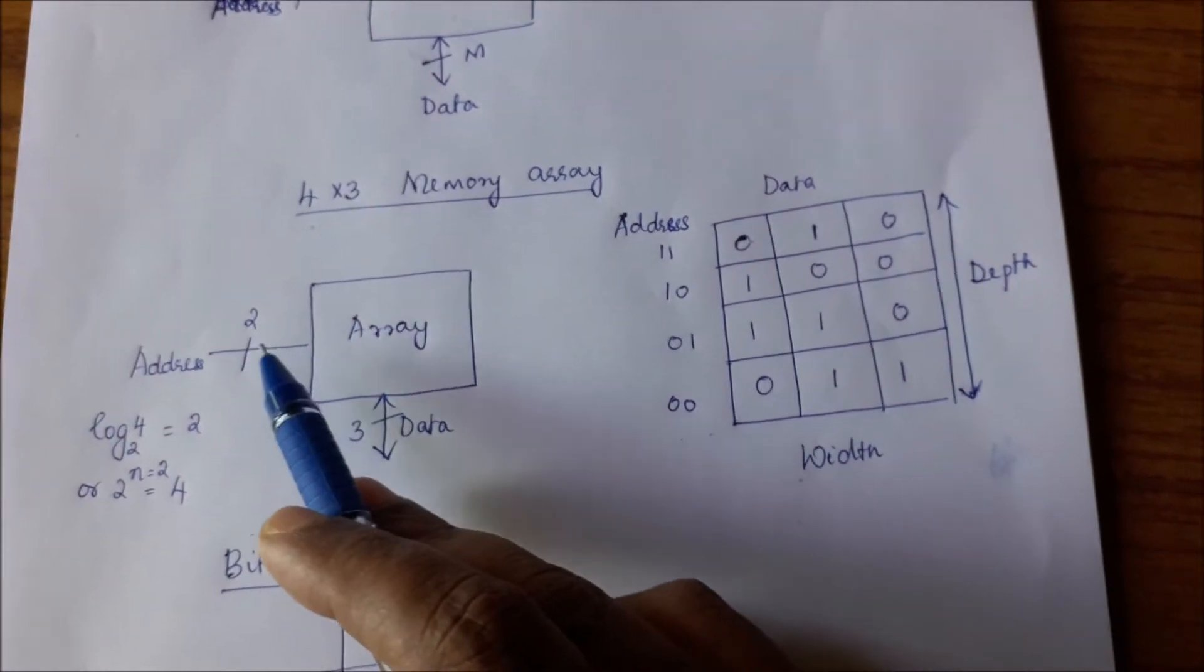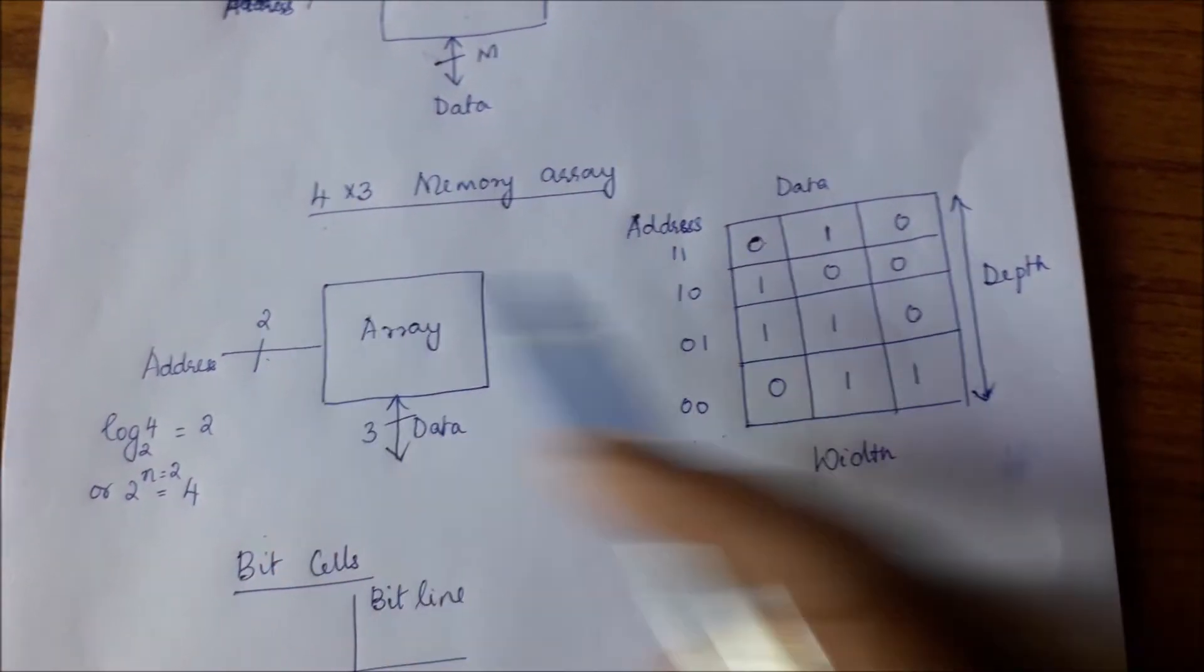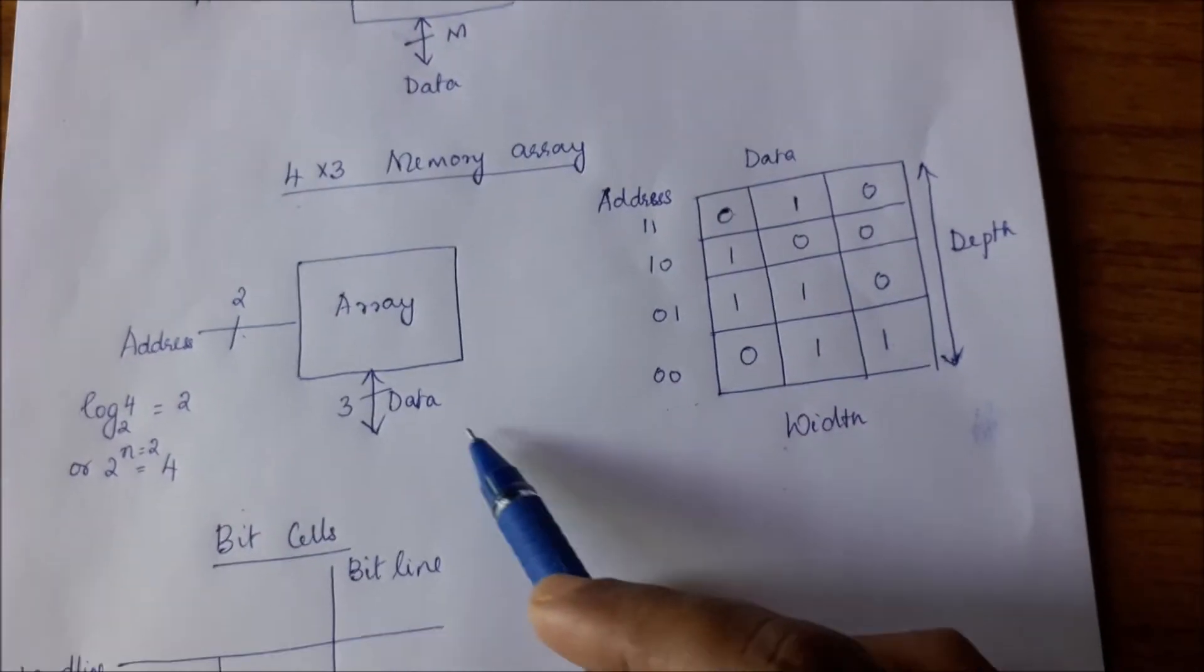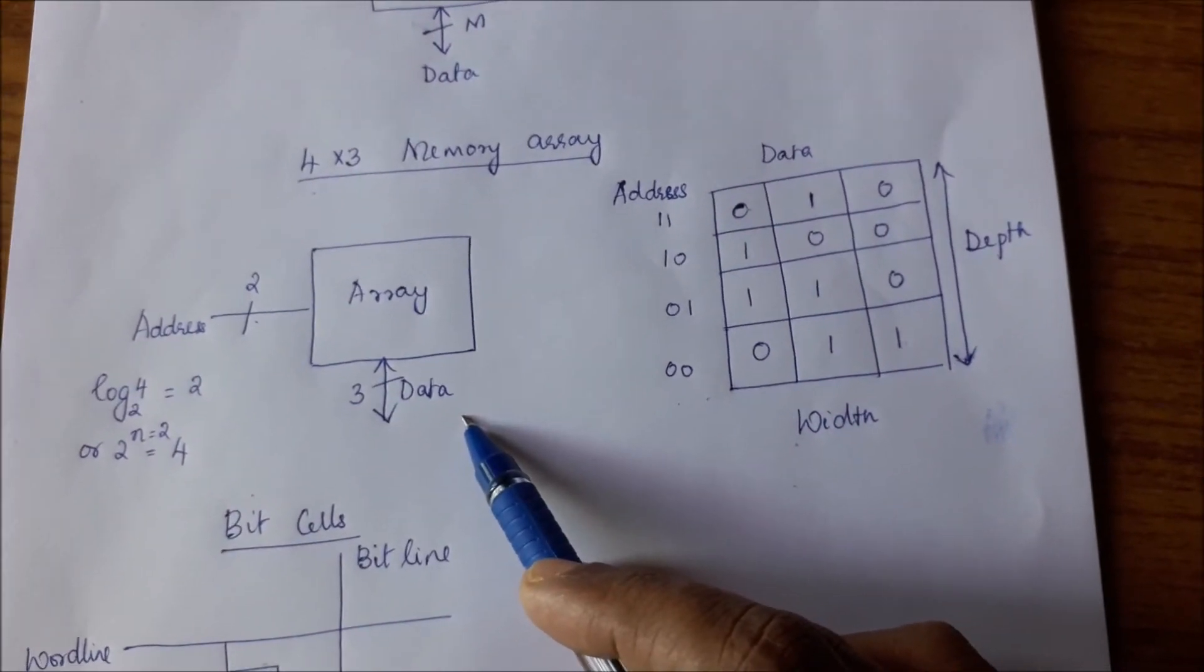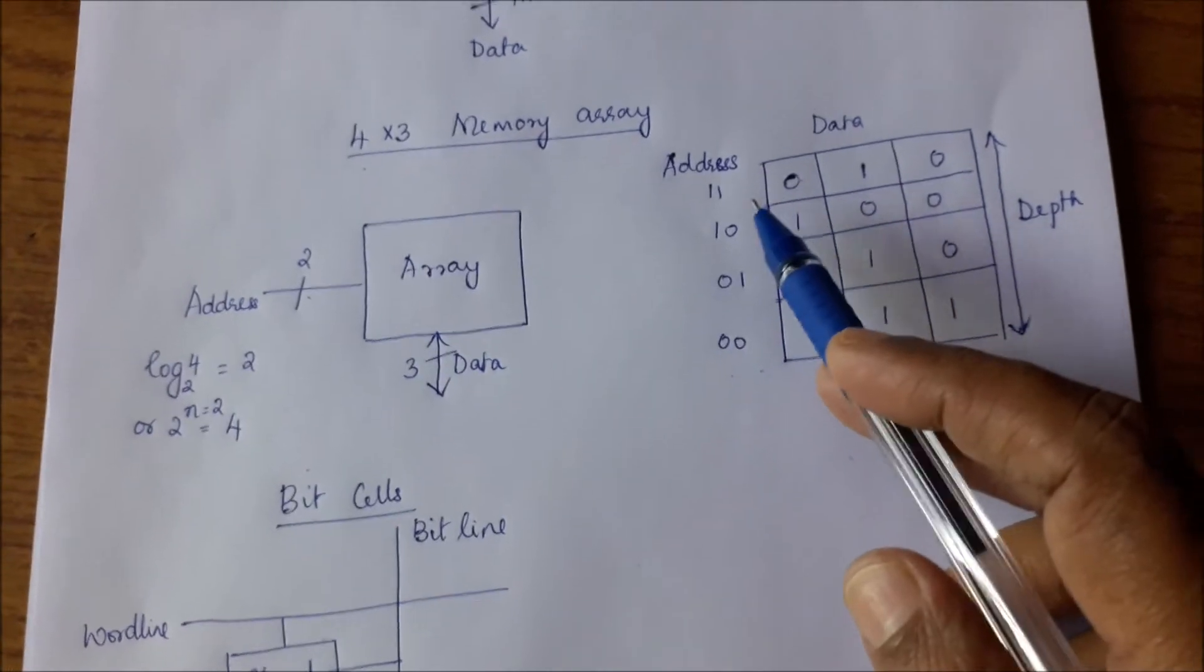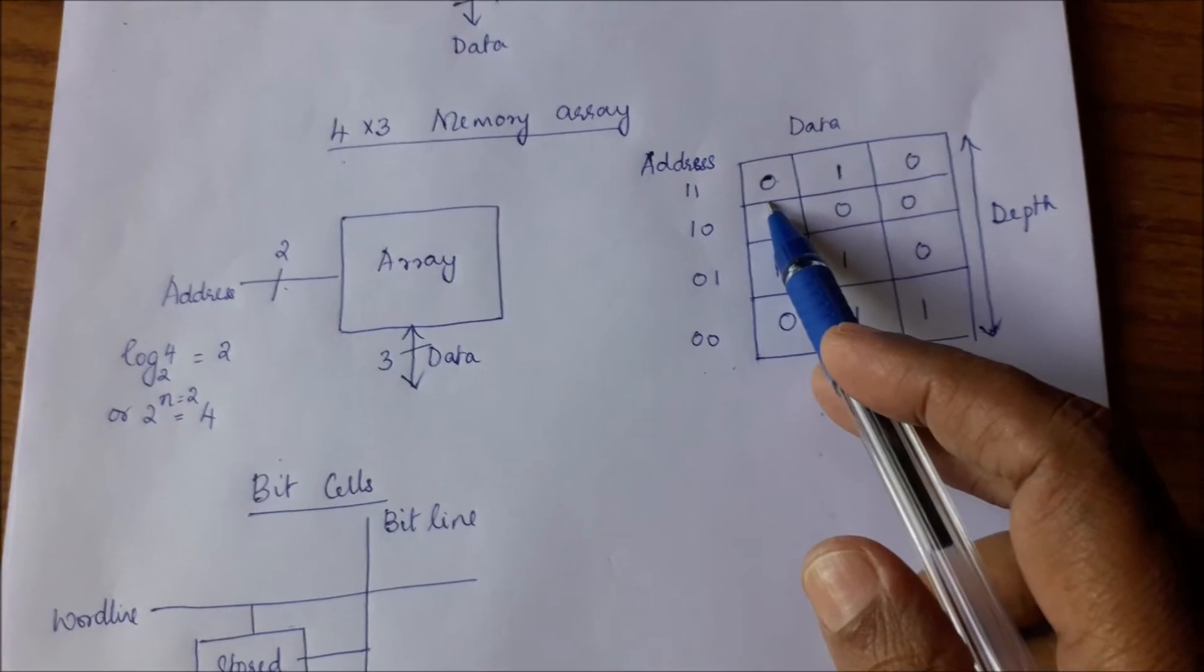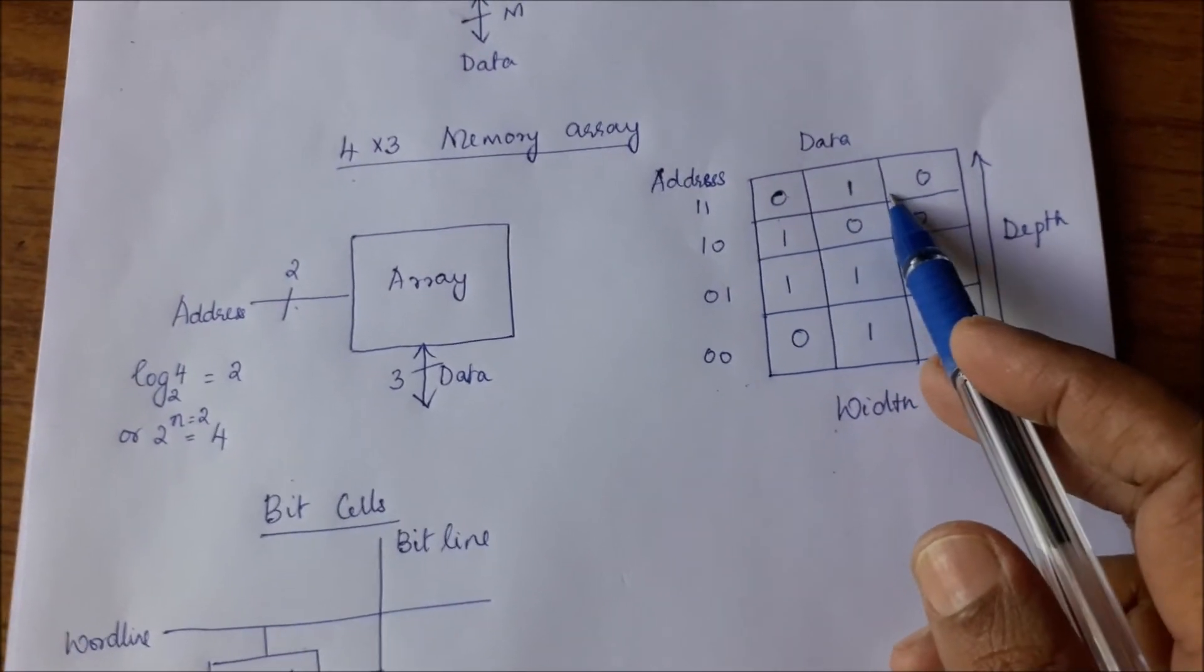What you are going to get at the output over here will be 1, 0, 0. You have given an address of 1, 0, and what is there in the second data word—you have got 1, 0, 0. So that 1, 0, 0 is going to come over here. Each of these things are called bit cells because they store 1 bit.